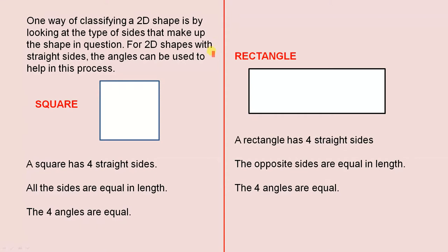So let's look at the square. A square has 4 straight sides. All the sides are equal in length. The 4 angles are equal.